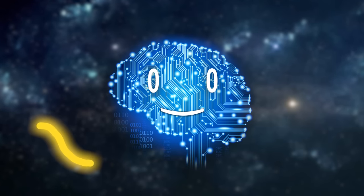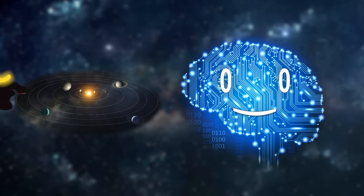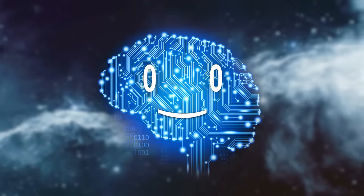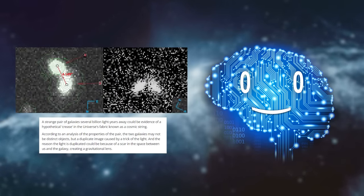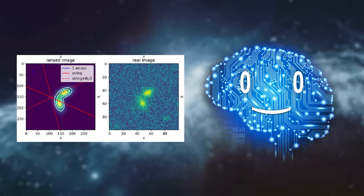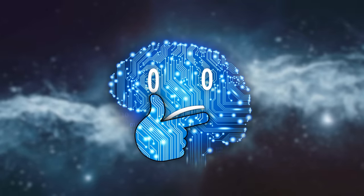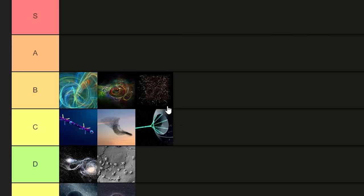It would not take a very long cosmic string to simply cut the Earth in half if it decided to take a walk through the solar system. Recently there has been evidence to support their existence in the form of a strange-looking galaxy that suggests a cosmic string could be bending light as it travels towards our instruments. If proven to exist, we might find ourselves in the middle of a cosmic fruit ninja game. B tier.